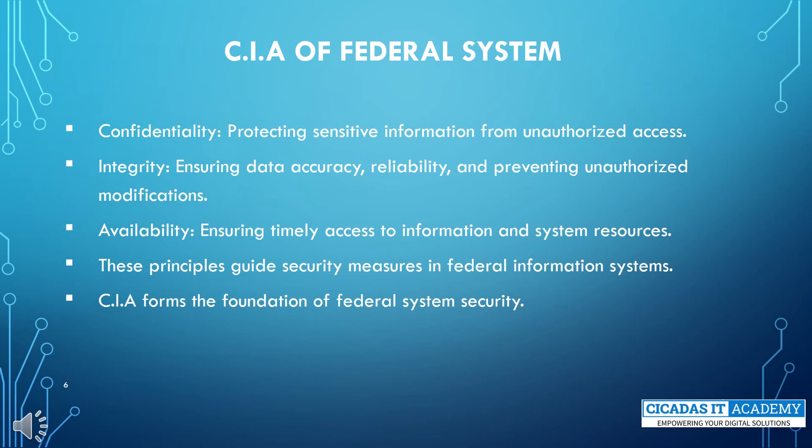The CIA principles form the foundation of security in federal information systems. Confidentiality involves protecting sensitive information from unauthorized access. Integrity ensures data accuracy and prevents unauthorized modifications. Availability ensures timely access to information and system resources. These principles guide security measures to safeguard federal systems and data.